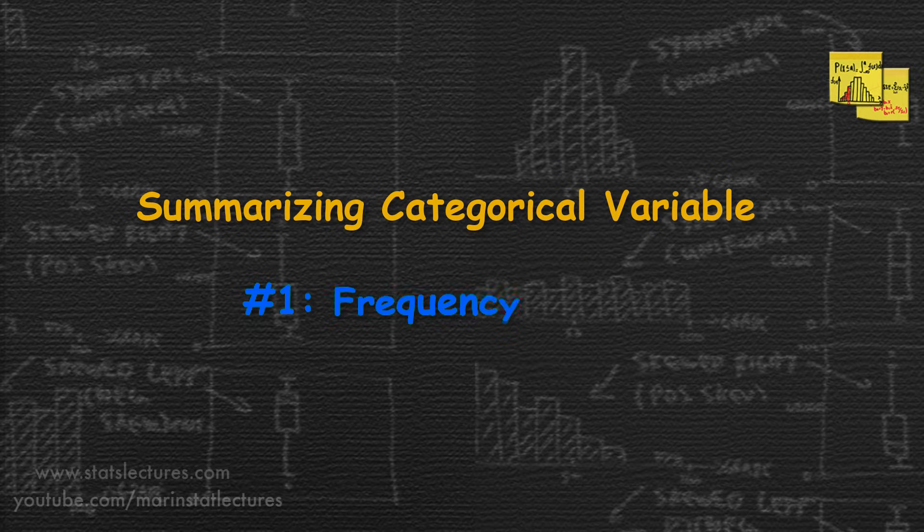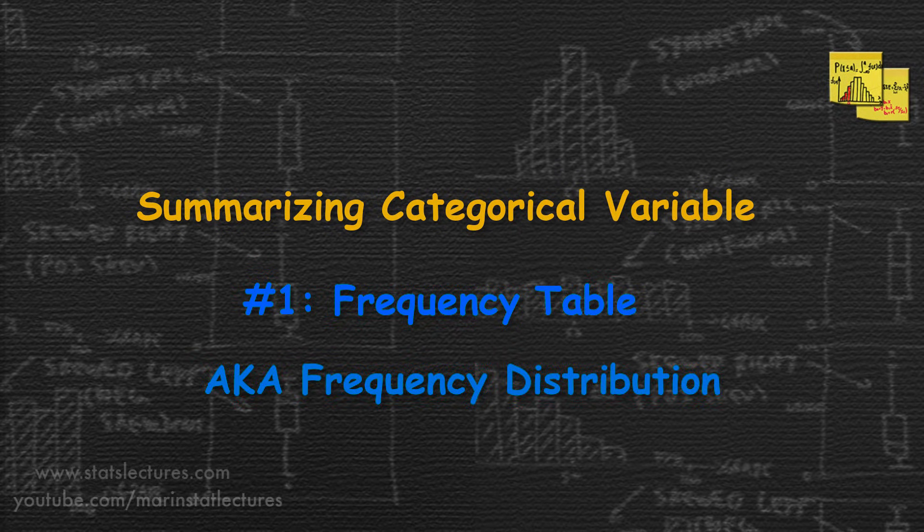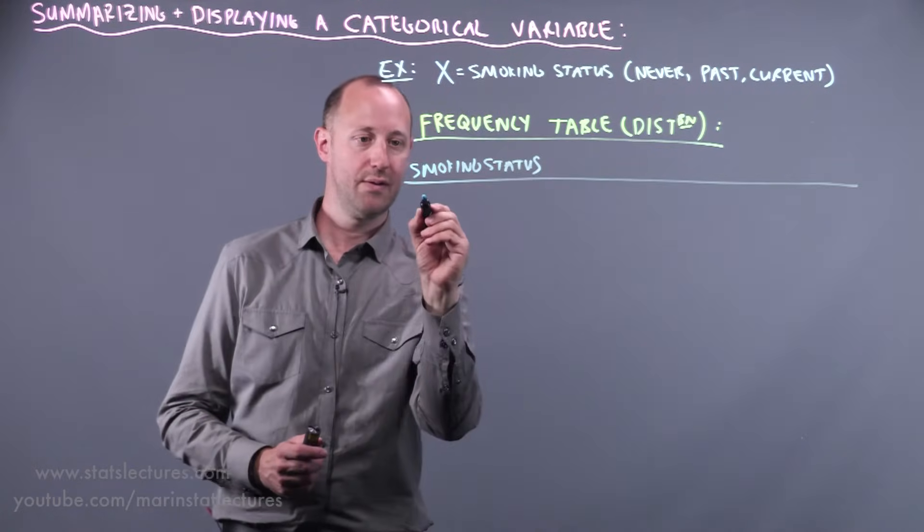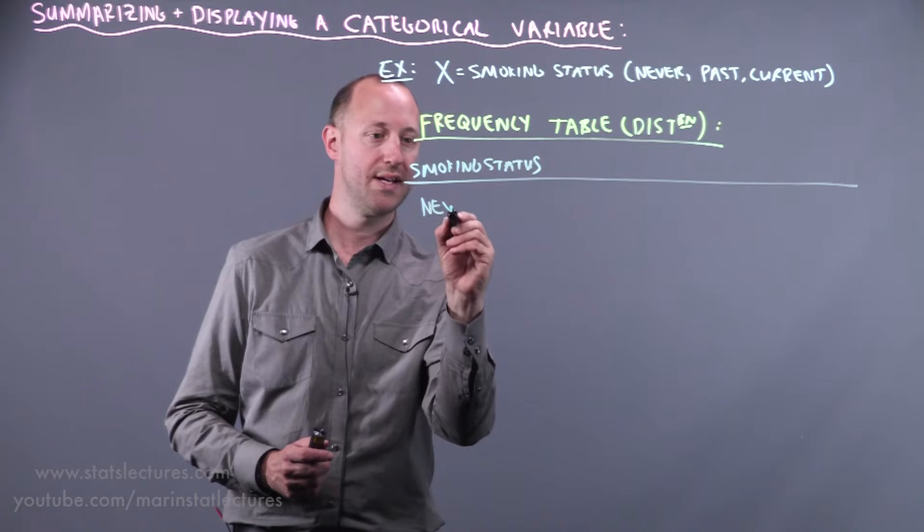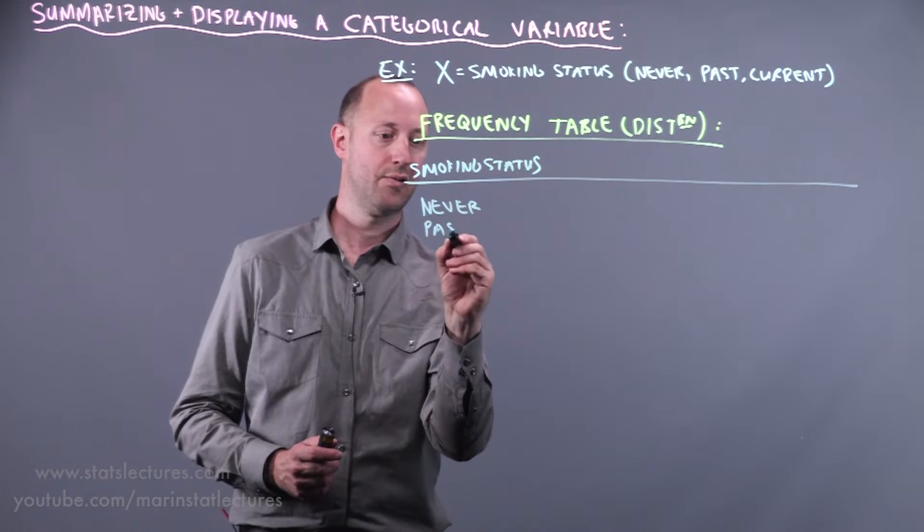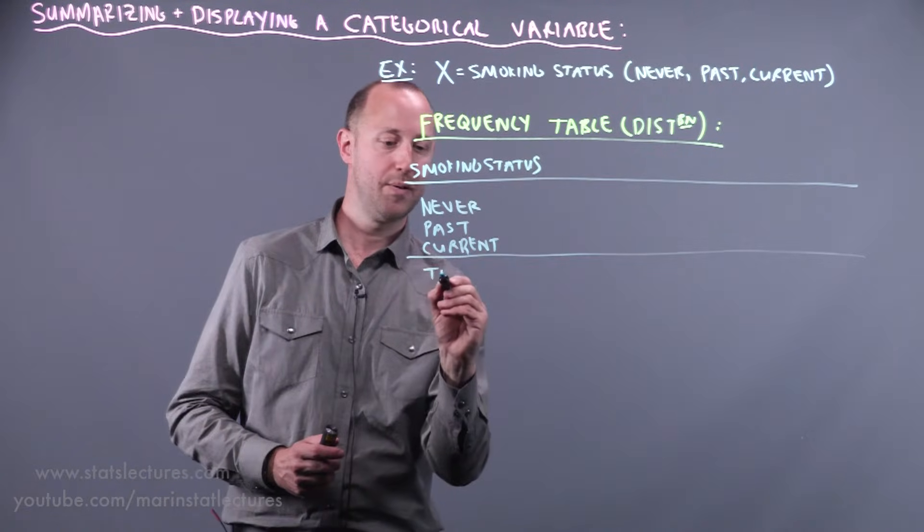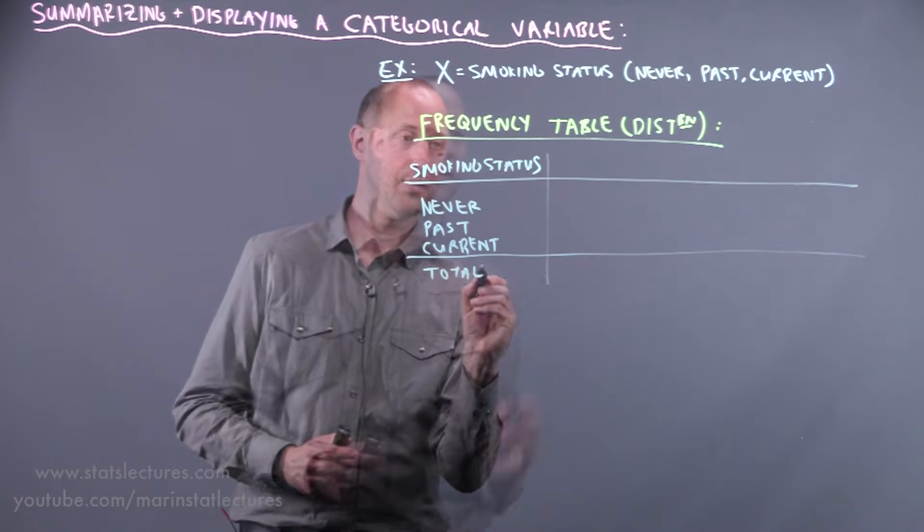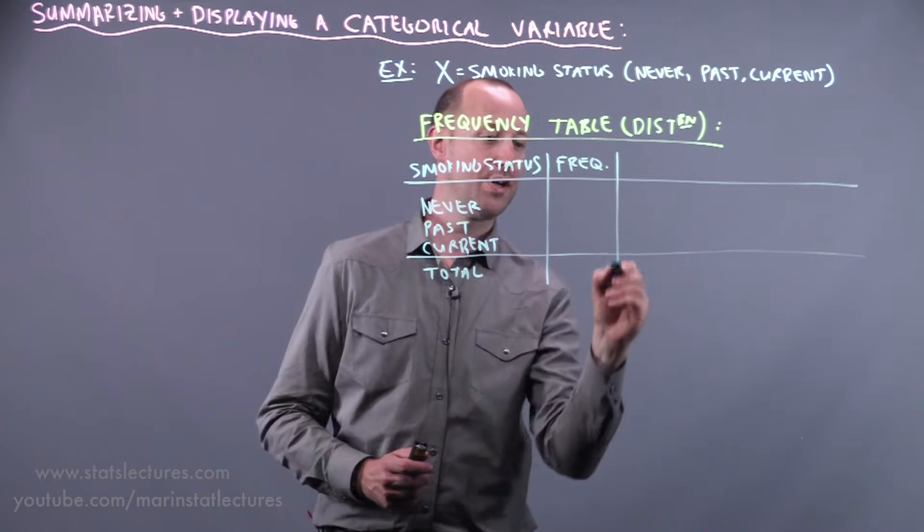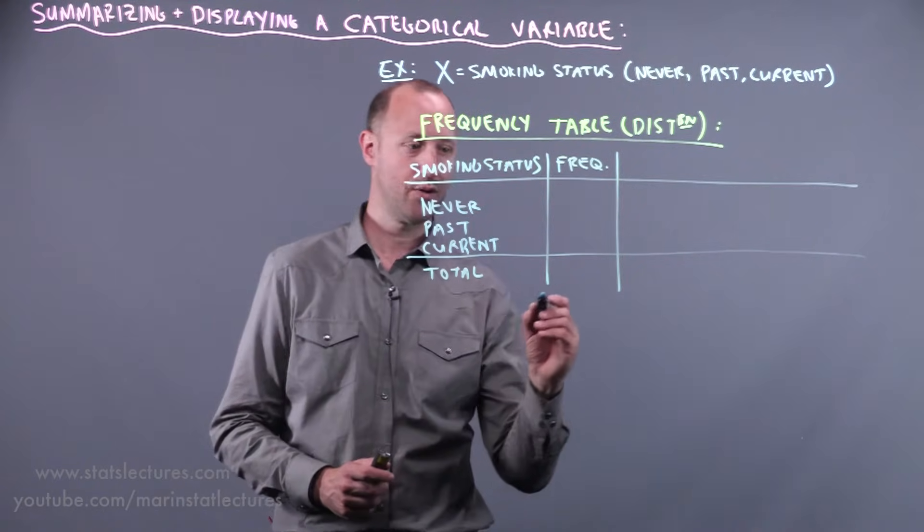The first thing we need to do is start by talking about a frequency table, or what sometimes gets called a frequency distribution. So we have the smoking status, and that we've recorded as never, as past, or current, and here I'll put down the total. We can think of recording the frequency, or the number that fall into each of these groupings for the categorical variable.